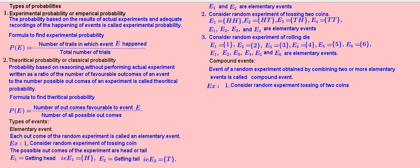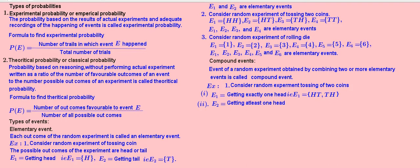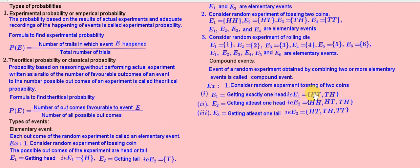Example: Consider the random experiment of tossing two coins. Event 1 — getting exactly one head: E1 = {HT, TH}. Event 2 — getting at least one head: E2 = {HH, HT, TH}. Event 3 — getting at least one tail: E3 = {HT, TH, TT}. Here, two elementary events are combined in Event 1, and three elementary events are combined in Events 2 and 3.